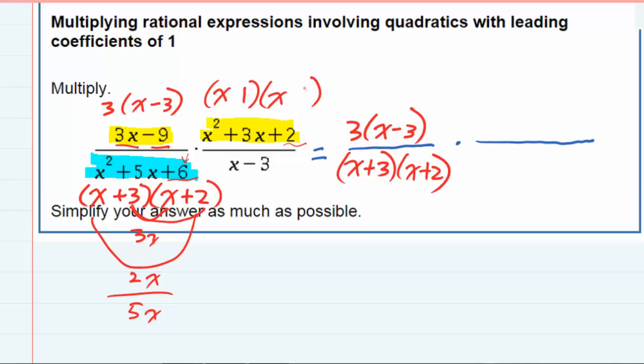So 1 and 2, both of those pluses. When I check, 1 times 2 gives me the 2. But then 1x and 2x gives me the 3x when I add those up. So that does factor into (x plus 1)(x plus 2).